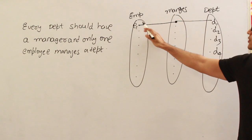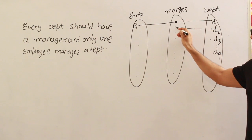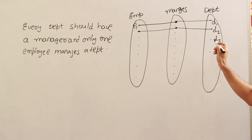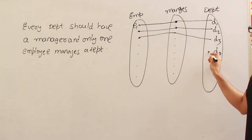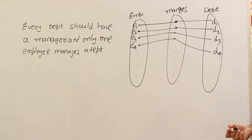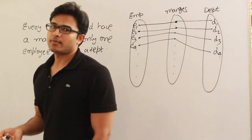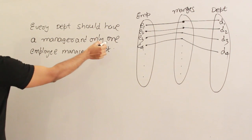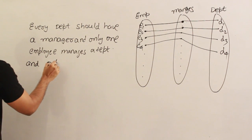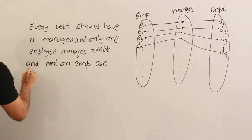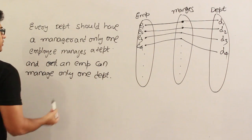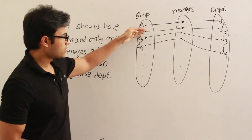Employee E1 manages department D1, and employee E2 is managing department D2. So E1, E2, E3, E4 — four departments are managed by four different employees. Let's add one more constraint: any employee can manage only one department, which means only one employee manages a department, and an employee can manage only one department. So one employee is never going to manage two departments.